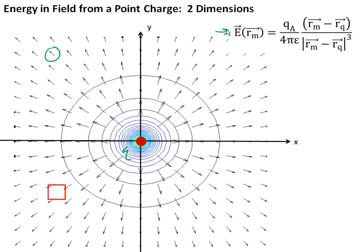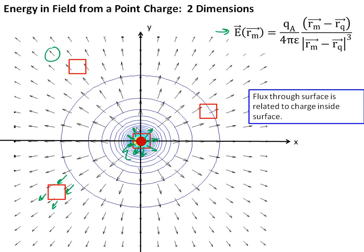If we take a look at any tiny little two-dimensional box of space, we notice something: there are about as many flux arrows or electric field lines going in as there are going out. This is true for practically any point in space. But if we put this box around the charge Q in the center, all the arrows are going out and none are going in. So there's a general principle: the flux through a surface is somehow related to the charge inside the surface. We have a technical definition for flux, and the flux through a surface is related to the charge inside it.